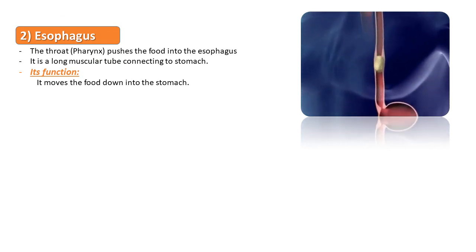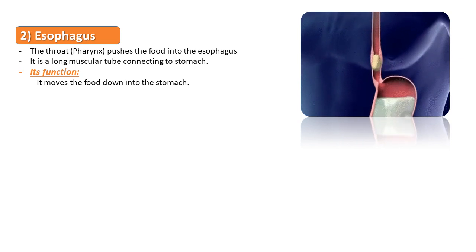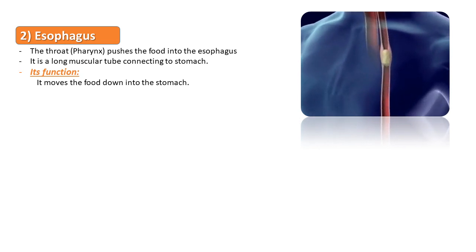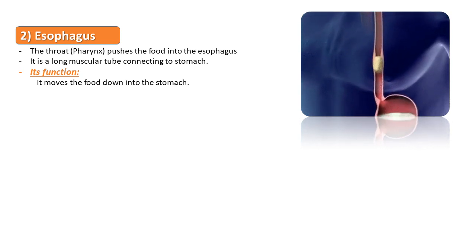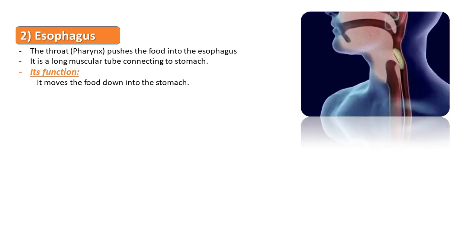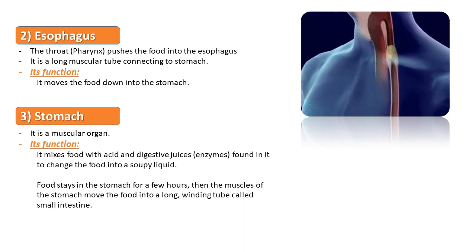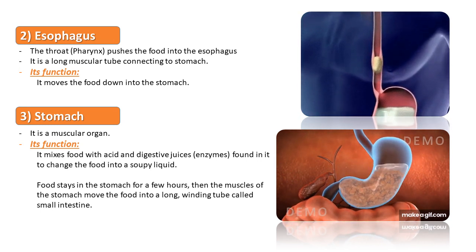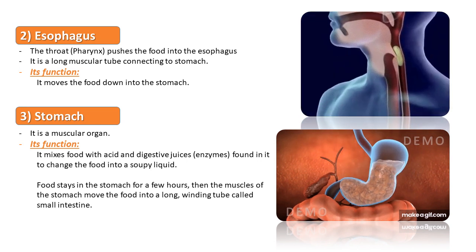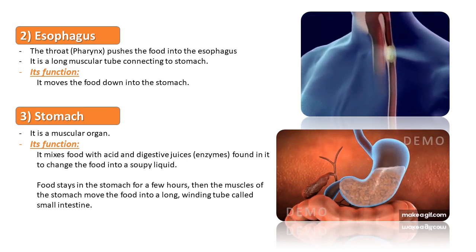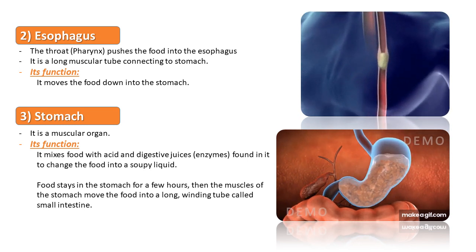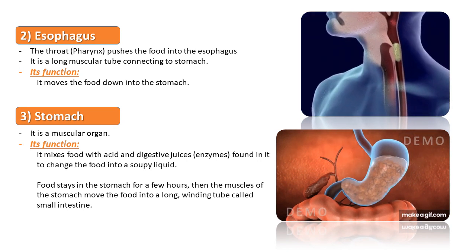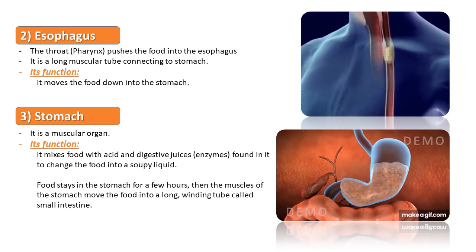The throat or pharynx pushes food into the esophagus, which is a long muscular tube connecting to the stomach. Its function is to move food down into the stomach. The stomach is a muscular organ that mixes food with acid and digestive enzymes or digestive juices to change the food into a soupy liquid, and this process takes a few hours.